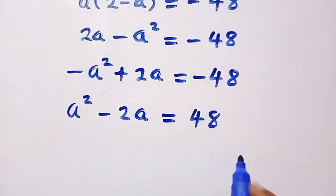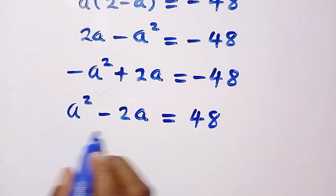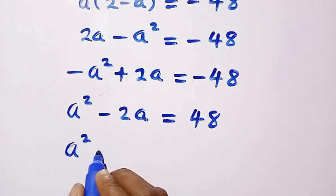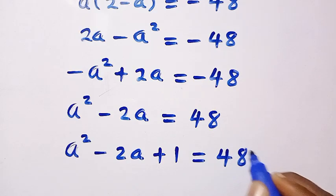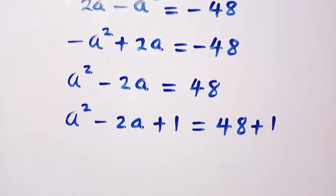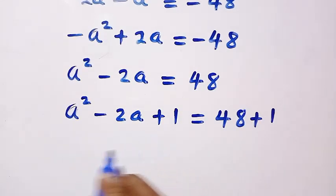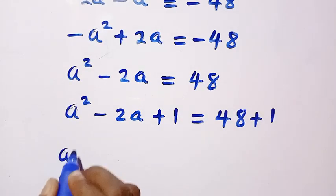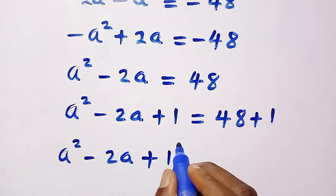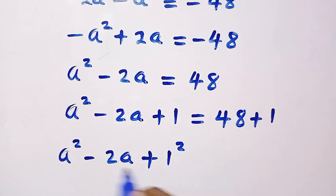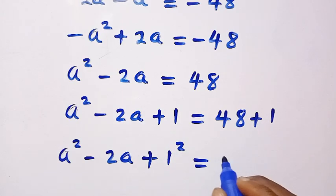Then let's add 1 to both sides. By adding 1 to both sides, we have a squared minus 2a plus 1 equals 48 plus 1. Then from this left hand side we have a squared minus 2a plus 1 - if 1 is just like 1 squared and 1 squared is still 1 - equals 48 plus 1, that gives us 49.